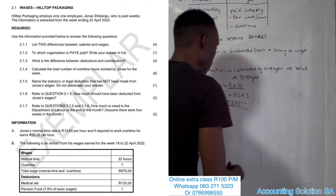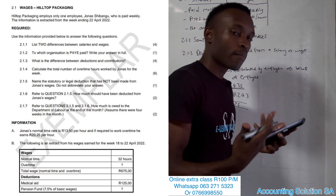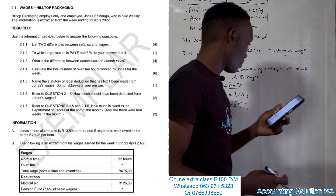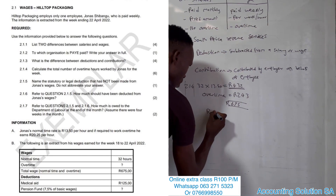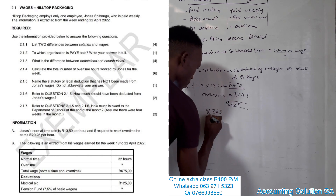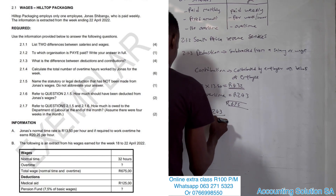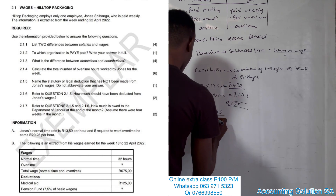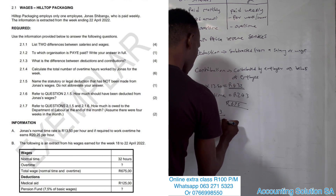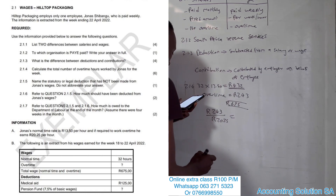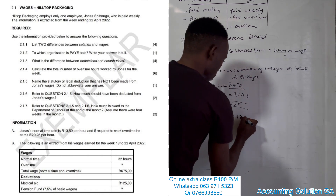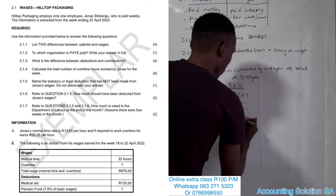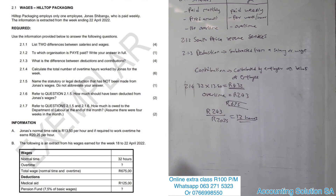Now we have the overtime amount of R243. The question asked for hours, so we divide R243 by the overtime rate of R21.25 per hour, which gives us 12 hours. That's how we calculate this — very simple! The next question says: name the statutory or legal deduction that has not been made from Jonas's wages. Do not abbreviate; write it in full. If you check the other deductions we have medical aid and pension fund only — UIF is missing and it is a must.